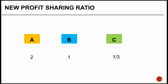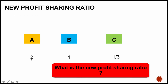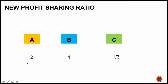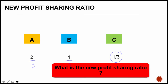This means that out of A's two-thirds share and B's one-third share, the one-third given to C has come in the same proportion — A has given two-thirds of one-third, and B has given one-third of one-third. Now let us find out the new profit sharing ratio using a specific example.